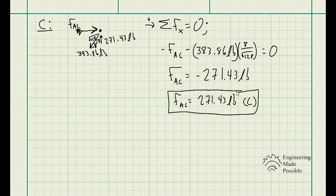This is the method of joints: you draw free body diagrams at the joints, look at the member forces reacting against the external forces applied to the structure. Now let's take a moment to explain tension and compression more clearly.